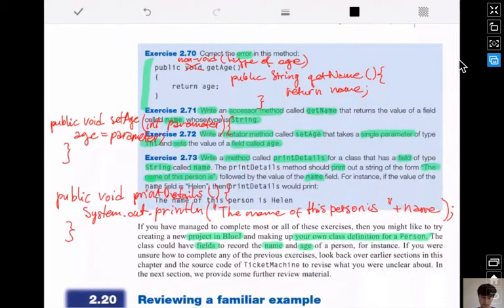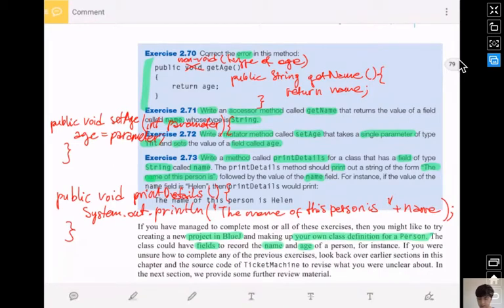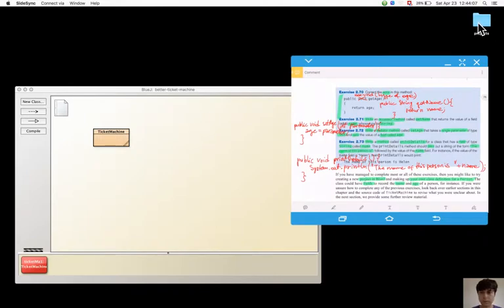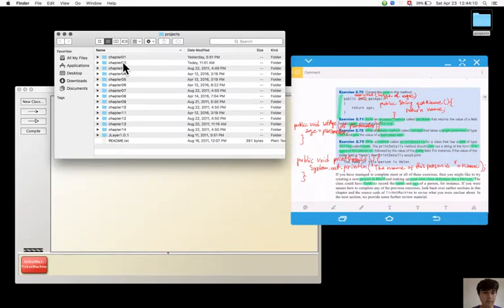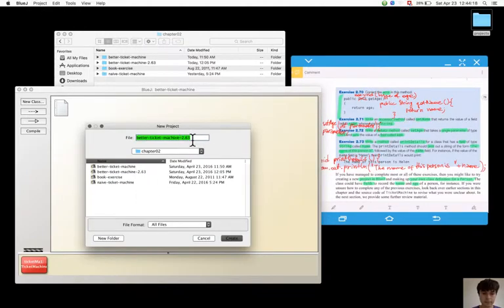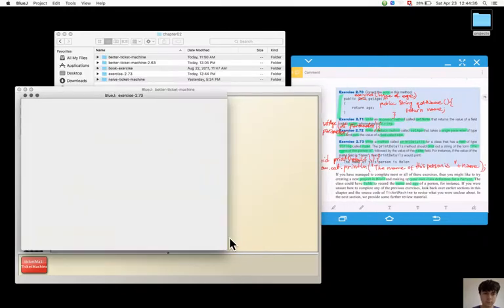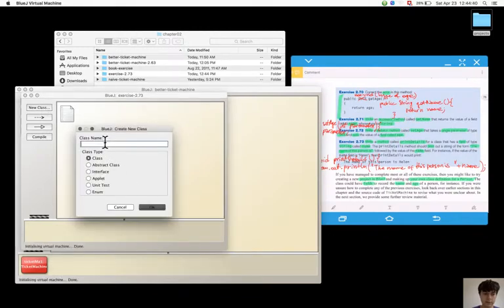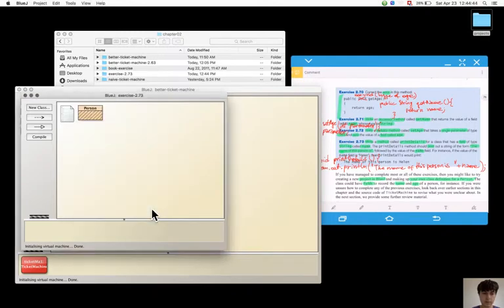Now I can make a project in BlueJ for my own class definition for a Person with the fields name and age. So I can make a new project here for exercise 2.73, make a new class Person.